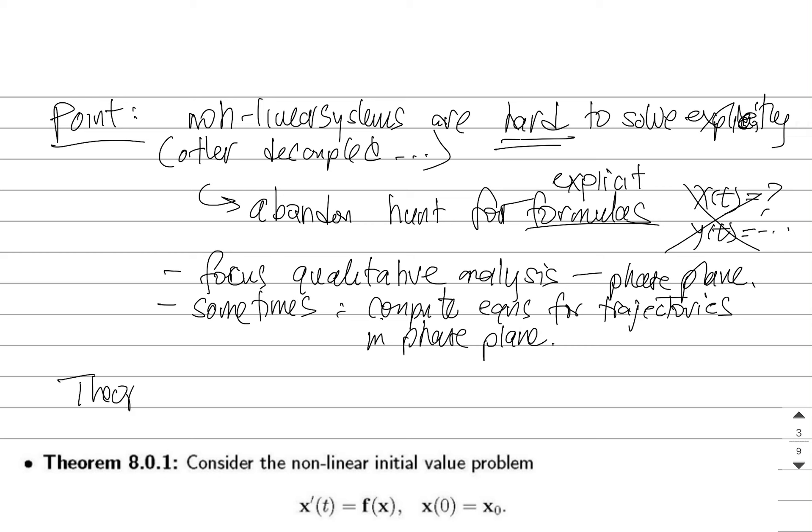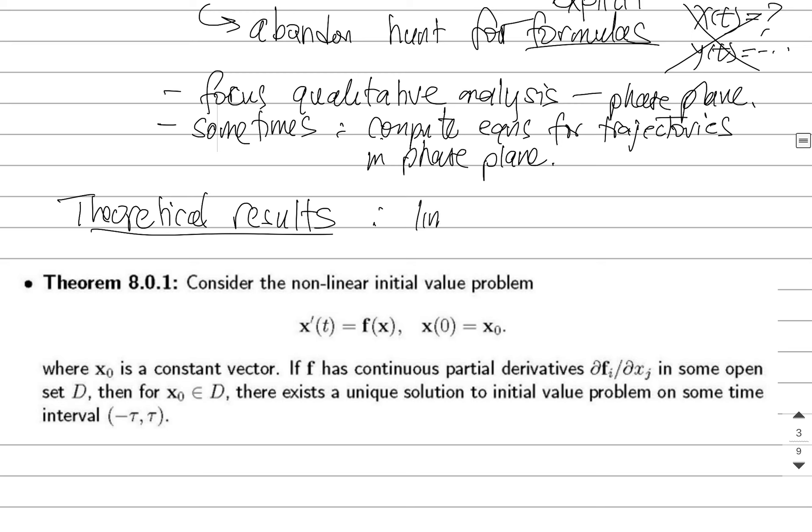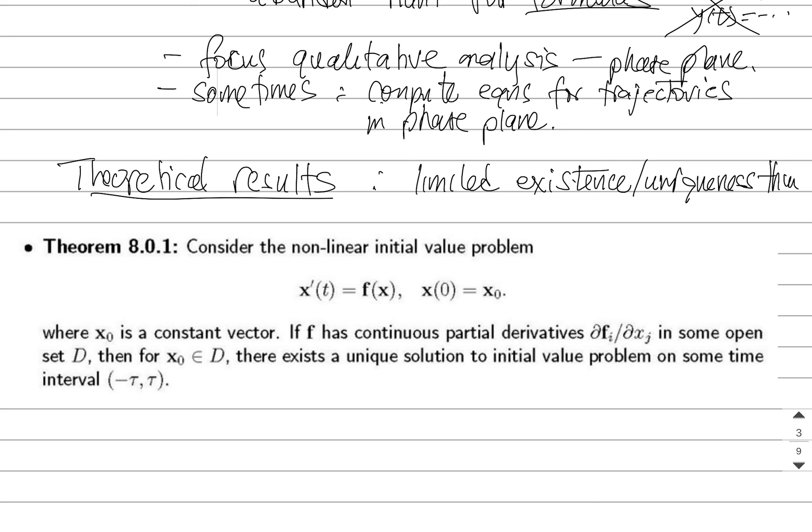Now, some theoretical results here. And this is something that I'm calling theorem 8.0.1. It doesn't really matter what it is. But essentially, it's some sort of limited existence and uniqueness theorem. It's limited because of the way that the statement of this theorem works. So if we give this non-linear system in vector field form, and we supply an initial condition, there is a condition on that vector field. So if that vector field here has continuous partial derivatives for all the different variables in some open set,